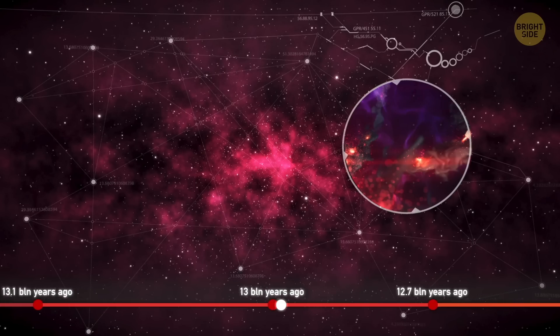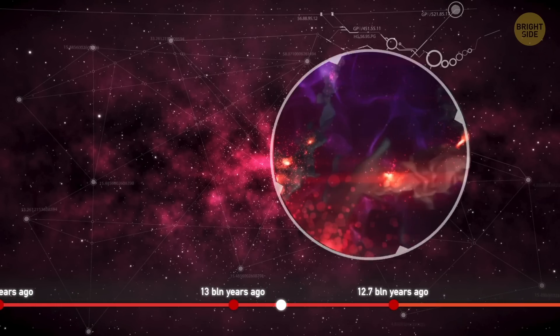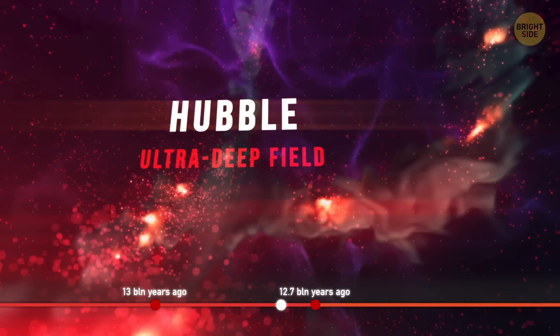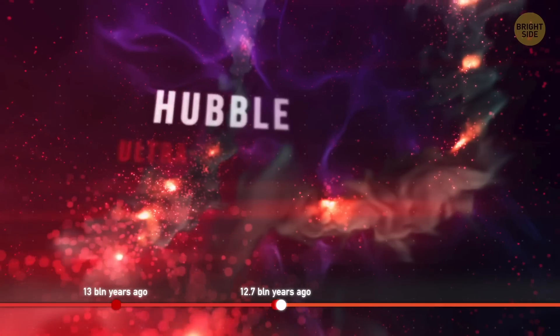The oldest ones are believed to have been born in a relatively small patch of sky called Hubble Ultra Deep Field, named so after the Hubble Space Telescope. It includes over 10,000 galaxies.